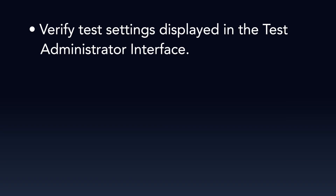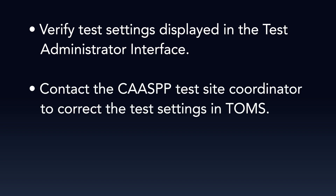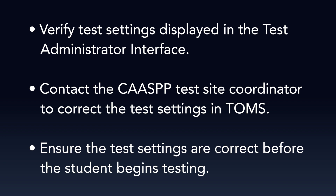It is important that test administrators and test examiners obtain an up-to-date test settings report for their students from the site coordinators to verify test settings displayed in the Test Administrator interface. If you know a student's test settings are incorrect, deny the student by selecting the Deny X icon, then contact the CAASPP test site coordinator to correct the test settings in TOMS and test the student on another day. Ensuring test settings are correct before the student begins testing is critical to avoid a test reset that may result in additional testing for the student later.